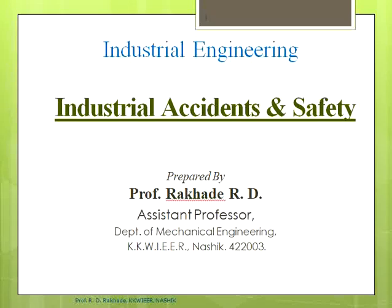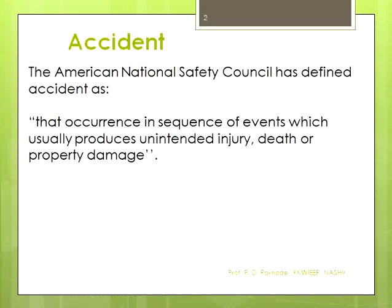In this video we will discuss industrial accidents and safety, a most important topic of industrial engineering. An accident is an unfortunate and sudden mishappening which causes damage or loss of property, material, or human life. The technical definition is that an accident occurs in a sequence of events which usually produces unintended results.